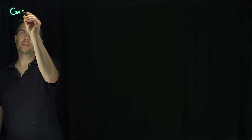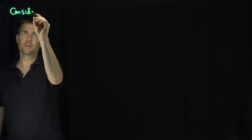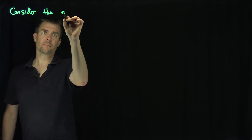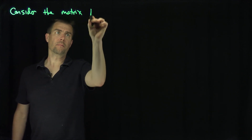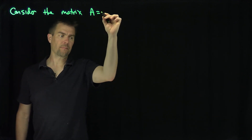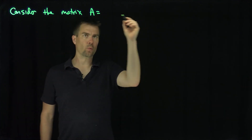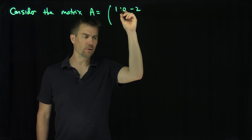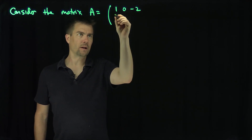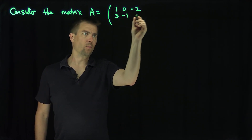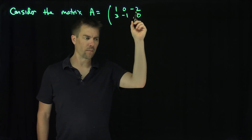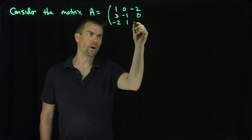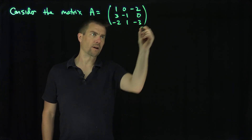Let's consider the matrix A, which is 1, 0, negative 2, 1, 0, negative 2, 3, negative 1, 0, and then negative 2, negative 2, 1, negative 3.